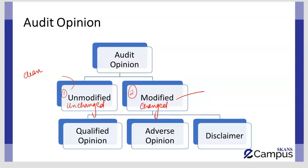There are three kinds of modifications that the auditor can make to the audit opinion. The first is a qualified opinion, the second is an adverse opinion, and the third is a disclaimer. Remember, all three are given in different circumstances.